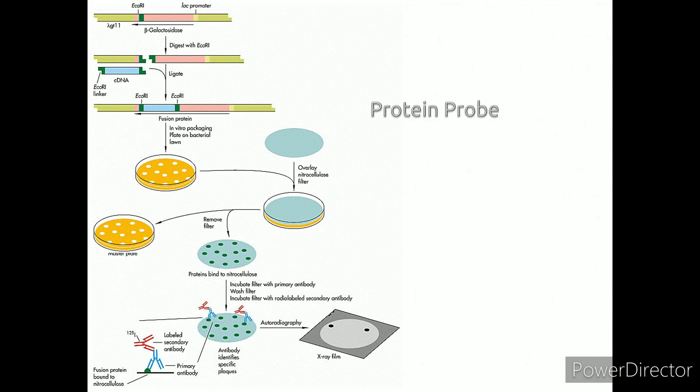Protein probe: If you have the protein product of the gene of interest, make an antibody against it. Then use the antibody to screen the library for the clone that is expressing the gene that codes for the protein.